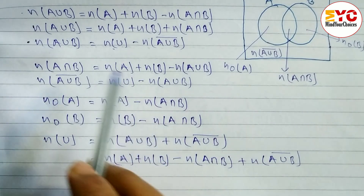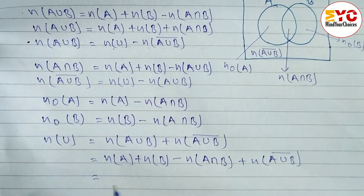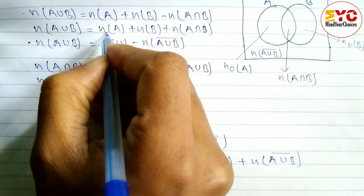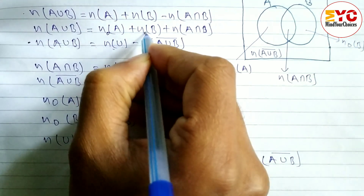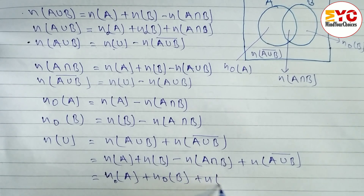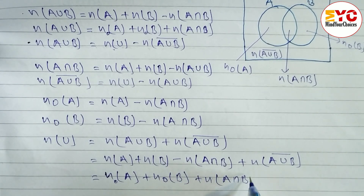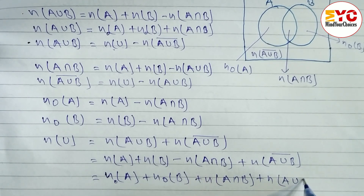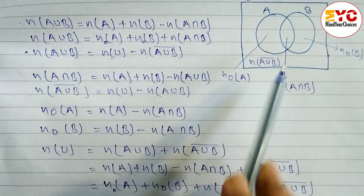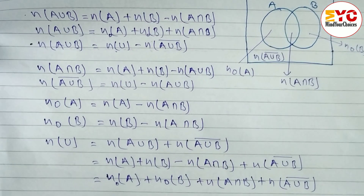Alternatively, n(U) can also be written as: n(only A) + n(only B) + n(A intersection B) + n(A union B) complement. So these are all the formulas for two sets. Now let us look at the three-set formulas.